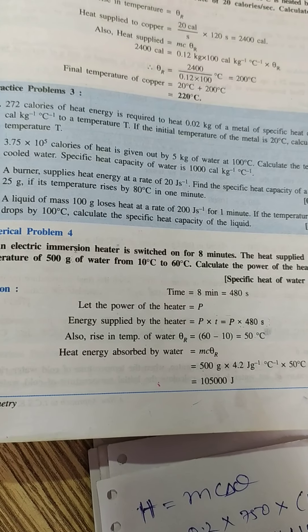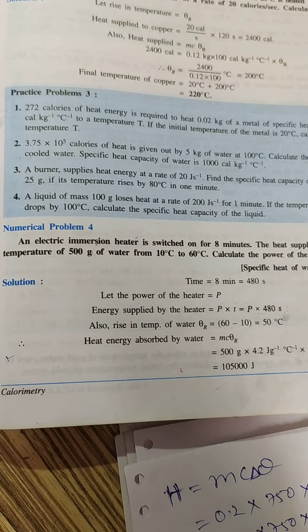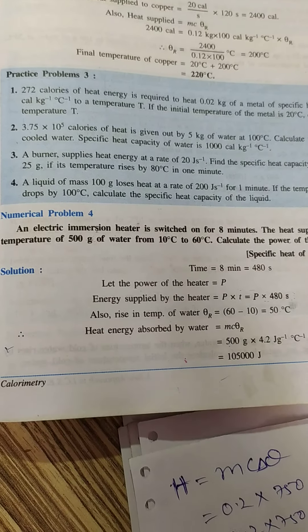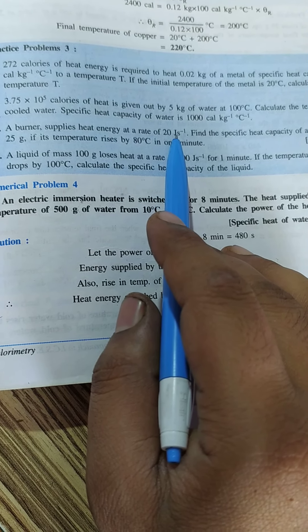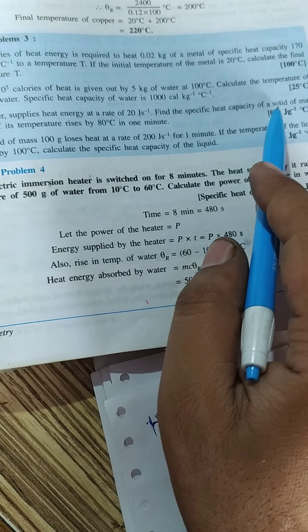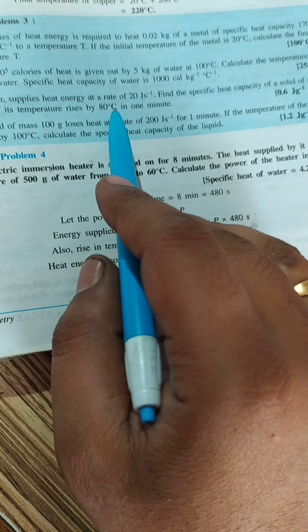Let us see one more sum. Let us see the third one of the practice problem. It is given that a burner supplies heat energy at the rate of 20 joules per second. Find the specific capacity of a solid of mass 25 gram if its temperature rises by 80 degree centigrade.